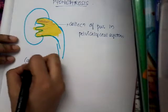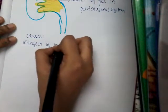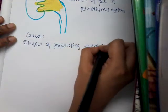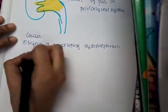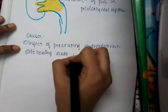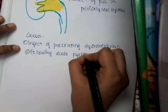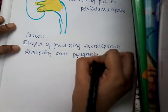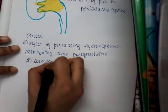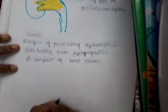What are the causes of pyonephrosis? Number one: infection of pre-existing hydronephrosis. Whenever there is pre-existing hydronephrosis and there is infection in that, it may lead to pyonephrosis. Number two: it may occur following acute pyelonephritis — infection of the kidney. Number three: it can occur as a complication of renal calculus. These are the causes of pyonephrosis.